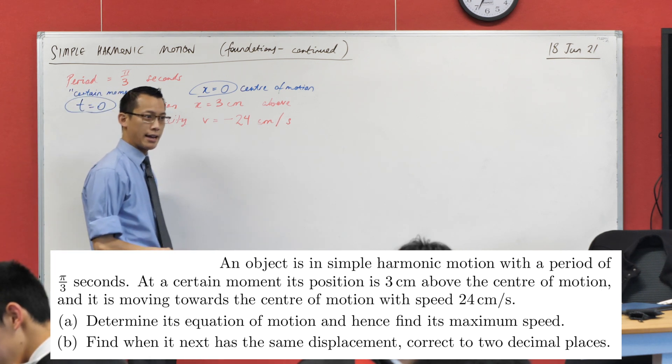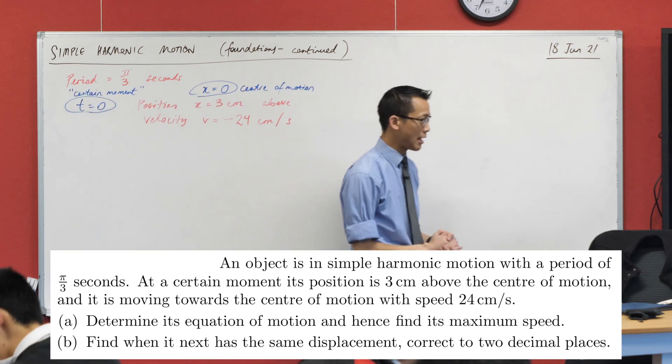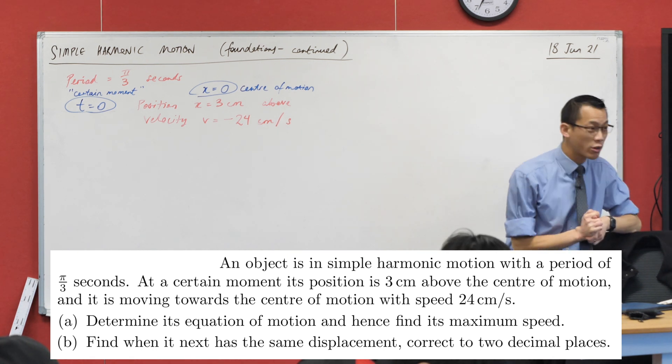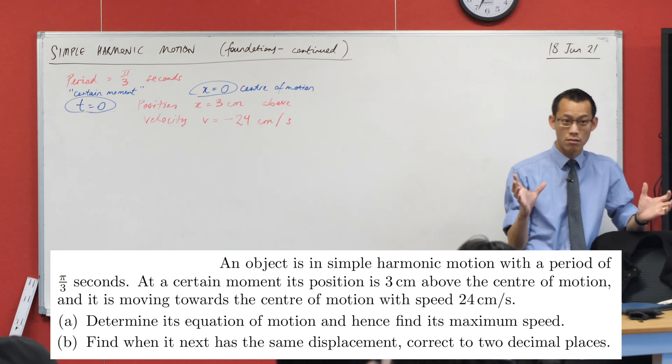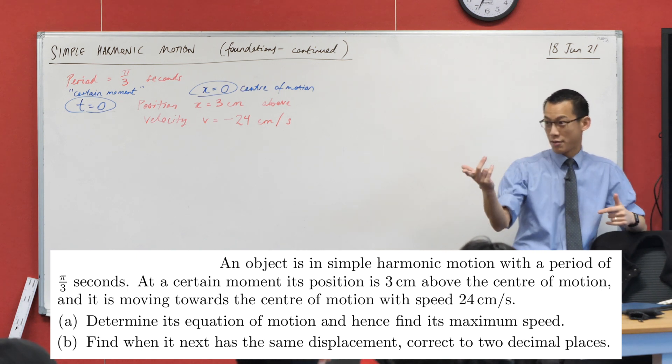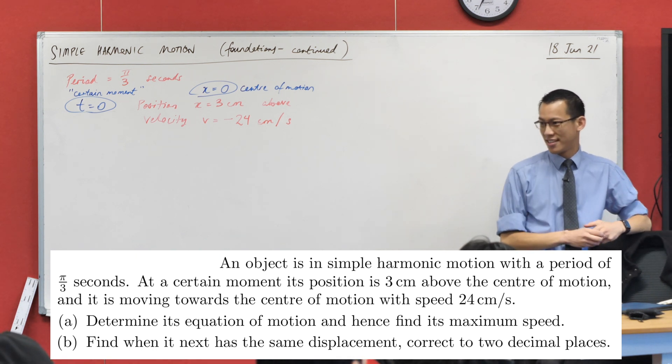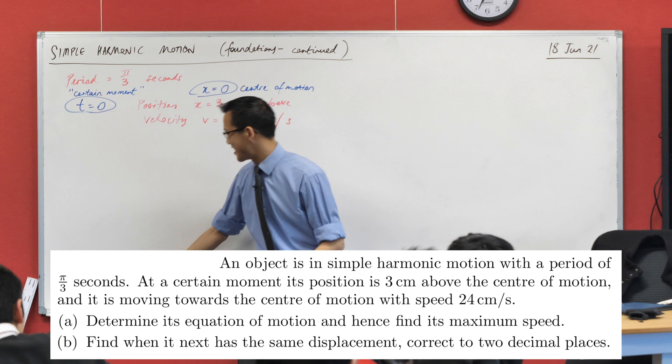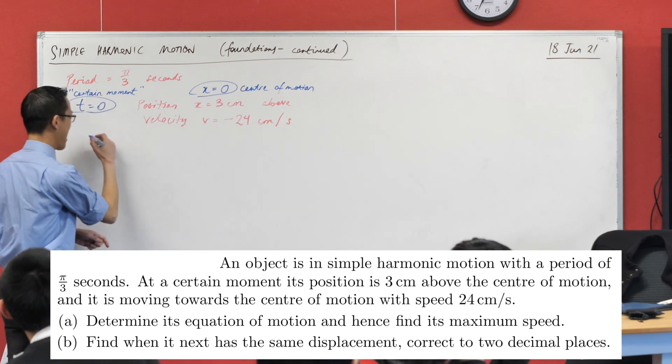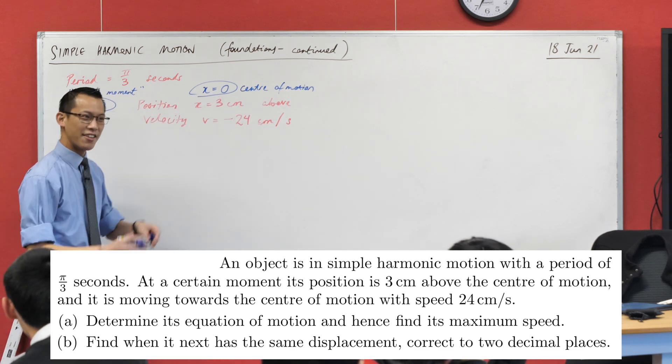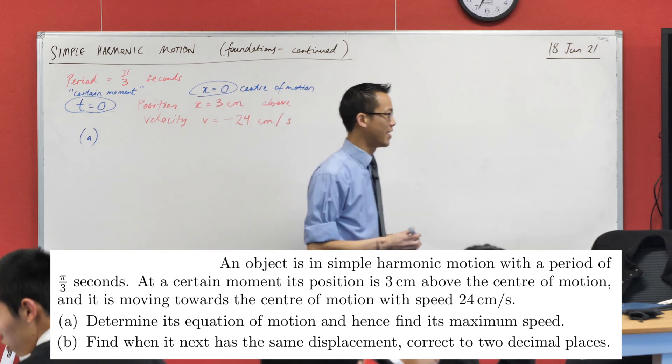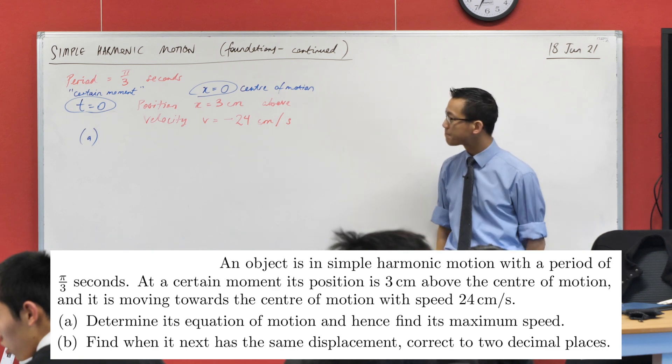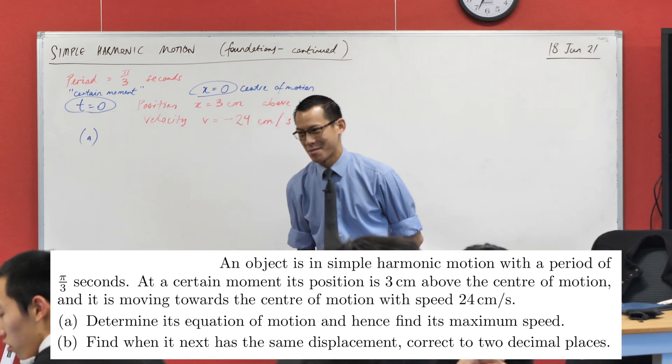Let's take stock again. Have a look at the question. Have I captured everything that the question has told me? Have I got all the data? Have I missed anything? It tells you it's in simple harmonic motion. This will be our next step. So I'm going to go and write down part A. I haven't actually done anything yet. I've just taken stock of the situation. But I hope you realize how important this pre-thinking is.